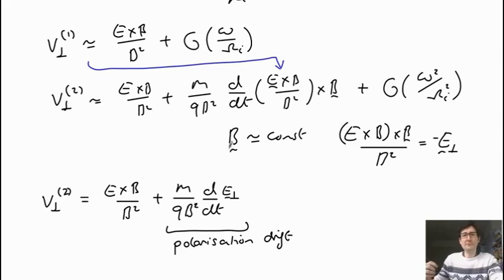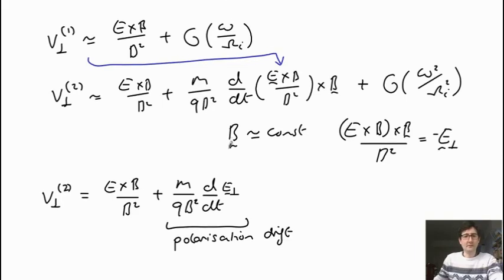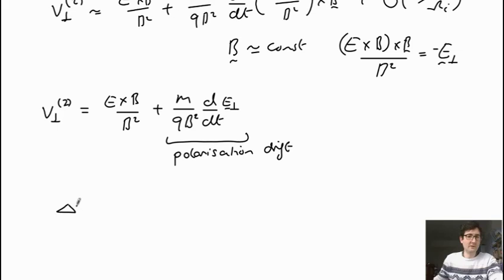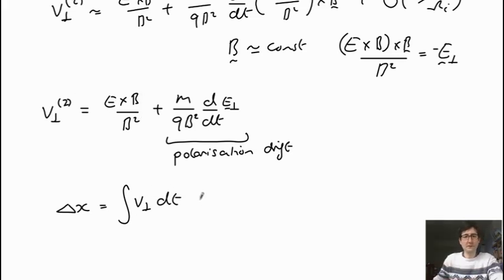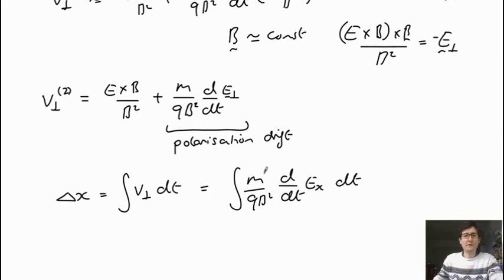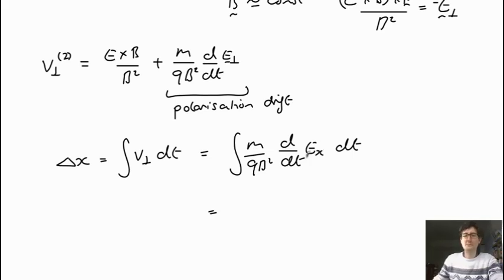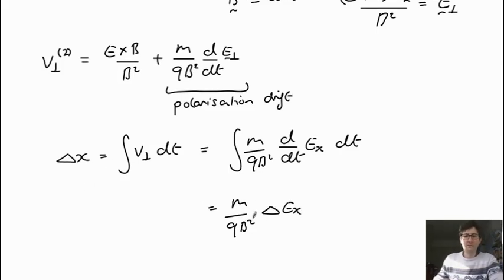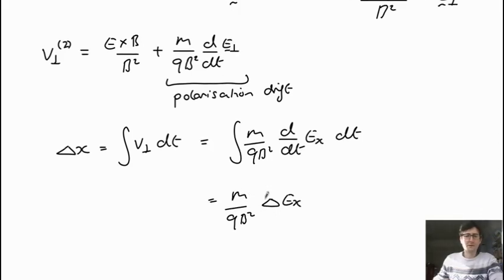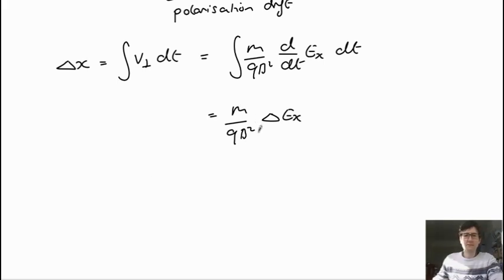Going back to the first example where an ion is sitting still and you turn on an electric field: the change in position is the integral of the drift over time. Ignoring the E cross B drift and looking only at the x direction, this is just the integral of m over qB² times dE_x/dt, integrated in time. Since m over qB² is constant, you just integrate the time derivative of E, giving m over qB² times the change in electric field. Because it depends on the mass, this is typically large for ions and typically ignored for electrons.